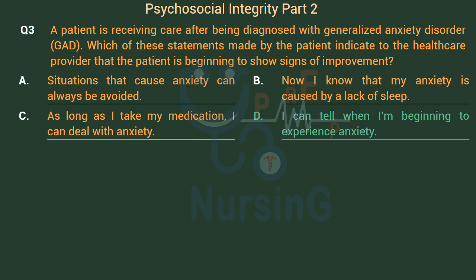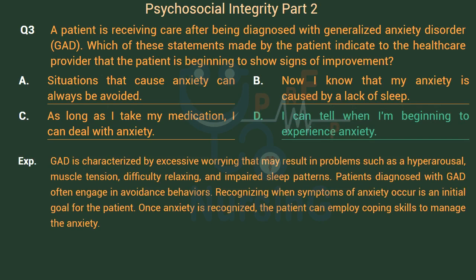The right answer is Option D: I can tell when I'm beginning to experience anxiety. GAD is characterized by excessive worrying that may result in hyperarousal, muscle tension, difficulty relaxing, and impaired sleep patterns. Patients diagnosed with GAD often engage in avoidance behaviors. Recognizing when symptoms of anxiety occur is an initial goal for the patient. Once anxiety is recognized, the patient can employ coping skills to manage the anxiety.